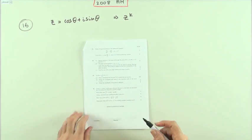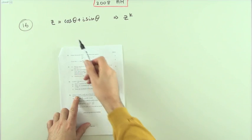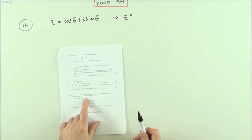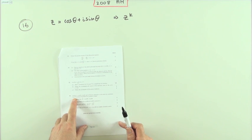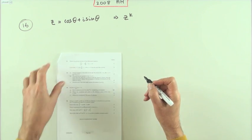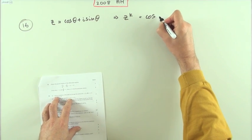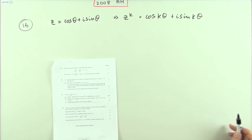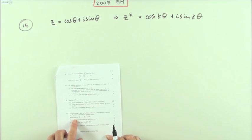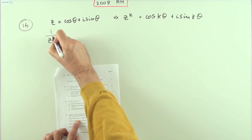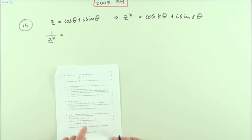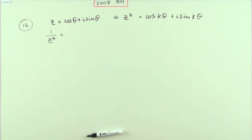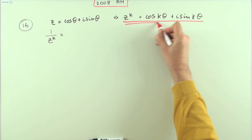Question 16, the last question in the 2008 Advanced Higher. Given a complex number z in its polar form, where the modulus is 1, use De Moivre's theorem to write down an expression for z to the k. That just means you can write it down straight away: z to the k is given by cos(kθ) + i·sin(kθ). That's the first mark.